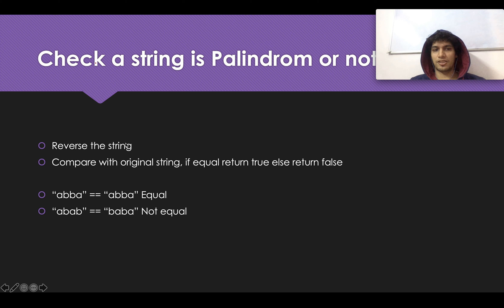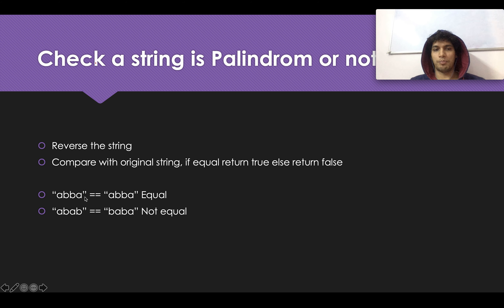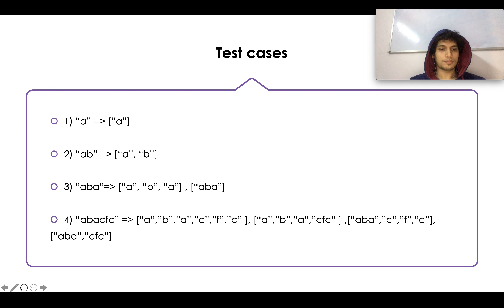Another simpler way: reverse the string, create a copy, and compare the reversed copy with the original. If both are equal return true, else return false. For example, 'abba' reversed is 'abba' — equal, so return true. For 'abab' reversed is 'baba' — not equal, return false.